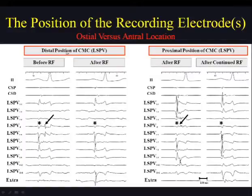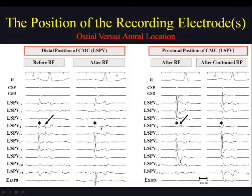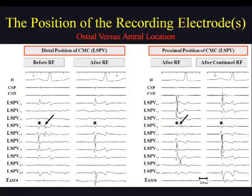This shows a more distal position versus a more proximal position of the circular mapping catheter. If your PVAC is deep in the pulmonary vein, you can have elimination of the local PV potentials, with only far-field remaining. But if you pull back the catheter a few millimeters, you may see that more anterally there is no elimination of the local PV potentials — indicating incomplete PV isolation due to incorrect interpretation of the PVAC position. You must continue ablation to achieve full antral isolation.